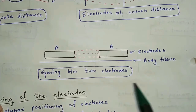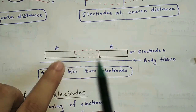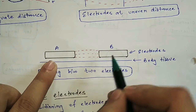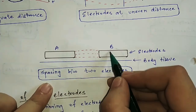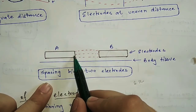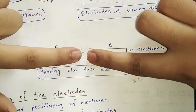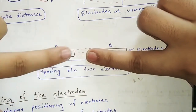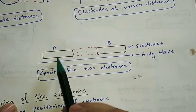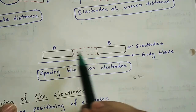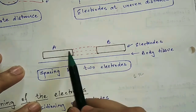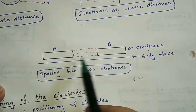The spacing between two electrodes should be more than the combined width of both electrodes. If the spacing is less than the combined width of the electrodes, the electric field will pass away from the tissue. We must avoid this and maintain adequate spacing.